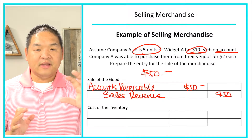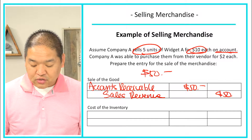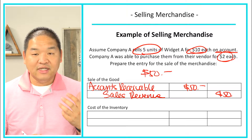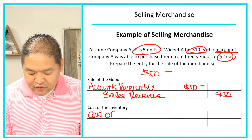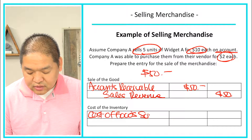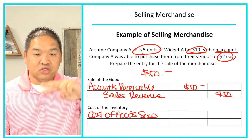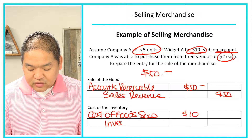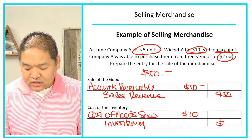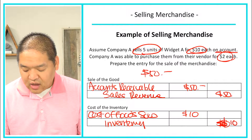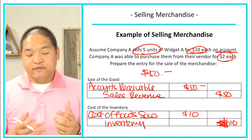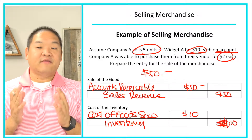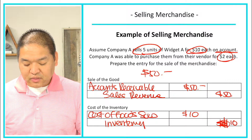Now that we have the sale recorded, we need to think about the cost of goods sold. The cost of these goods was $2 each to us, so we debit cost of goods sold — $2 times 5 equals $10. Then we credit inventory for $10 to reduce it, since we no longer have that inventory.